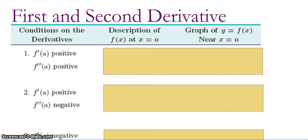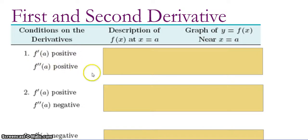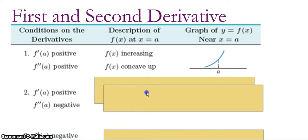So first, a recap of the relationship between a function and its derivatives. If the first derivative is positive at some point A, and the second derivative is also positive at that point A, what can we conclude? Well, if the first derivative is positive, then we know the function is increasing. And if the second derivative is positive, then we know the function is concave up.